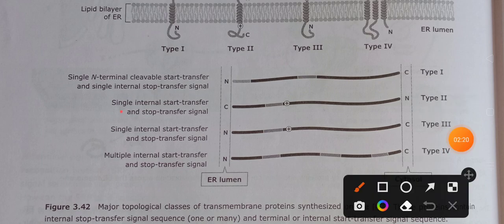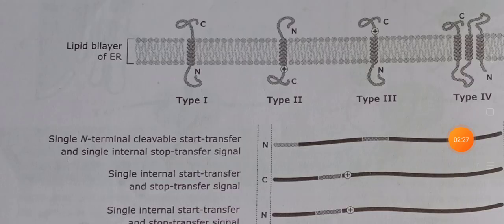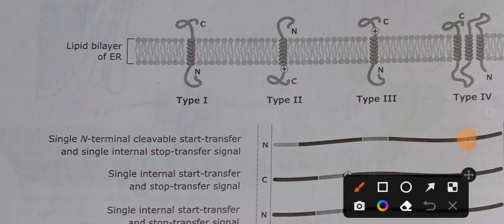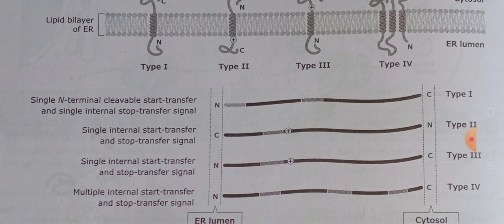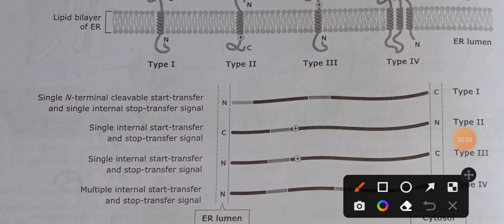Type 1 is a single-pass transmembrane protein with one N-terminus and one C-terminus. The N-terminus is at the ER lumen and the C-terminus is at the cytosol. Importantly, Type 1 has two signal sequences: an N-terminal start-transfer signal sequence and an internal stop-transfer signal sequence, both essential for targeting.